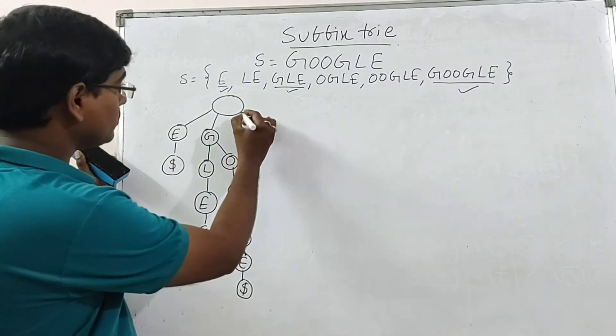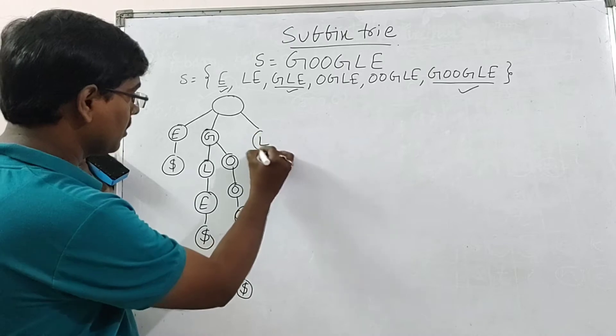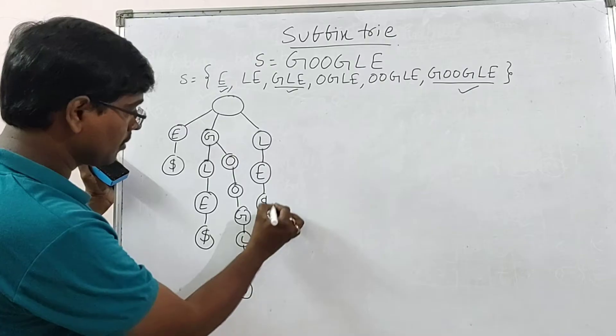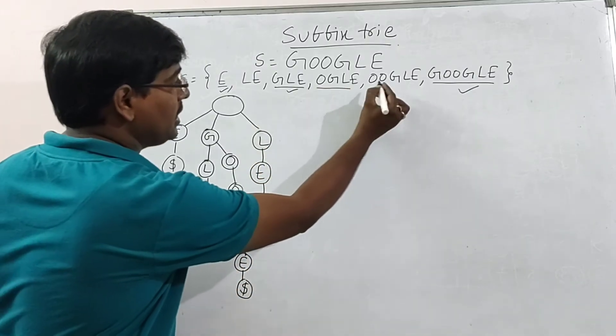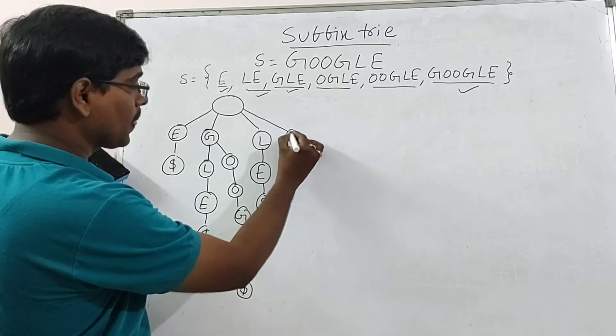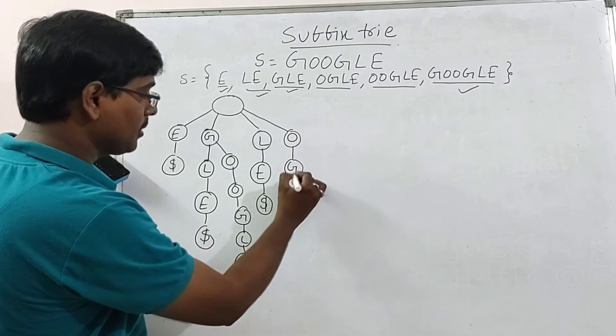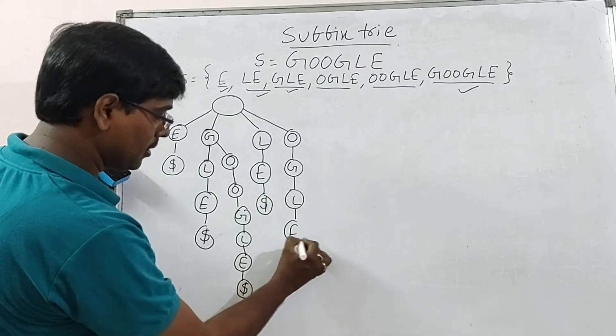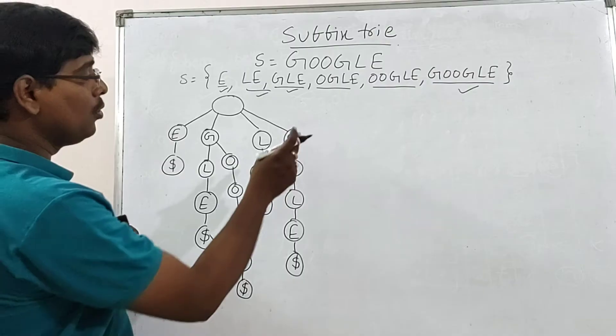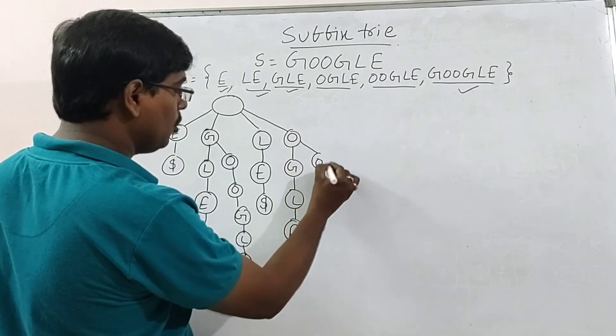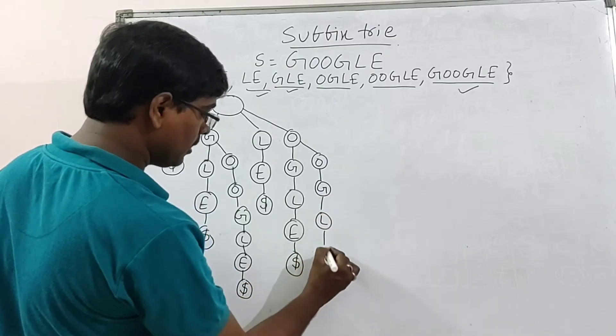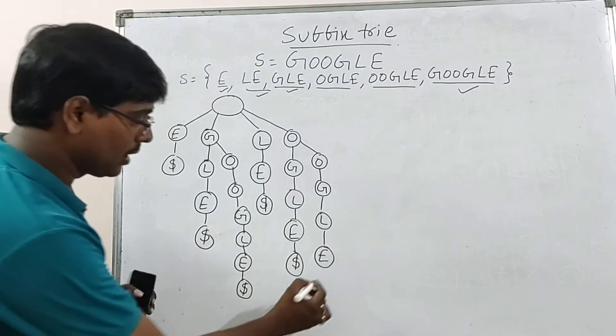L-E-dollar. Next two. O-G-L-E, O-O-G-L-E. O-G-L-E, end of a string. O-O-G-L-E. Already O is there. O-O-G-L-E-dollar. This is the standard trie.